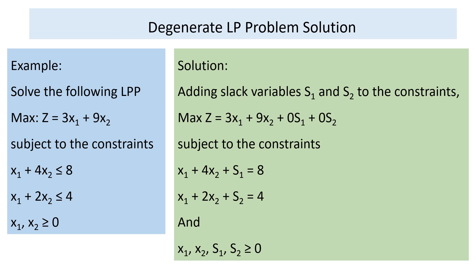Solve the following linear programming: maximize Z = 3x1 + 9x2, subject to x1 + 4x2 ≤ 8, x1 + 2x2 ≤ 4, and x1, x2 ≥ 0. To start, since the inequalities are less than or equal to, we add slack variables s1 and s2 to the constraints respectively.